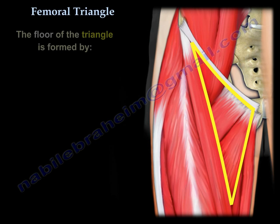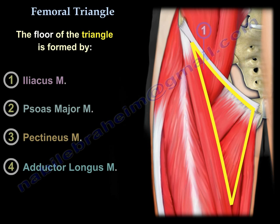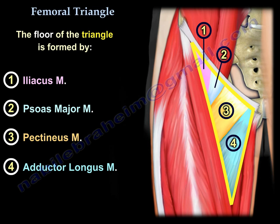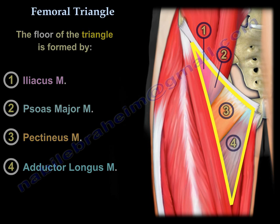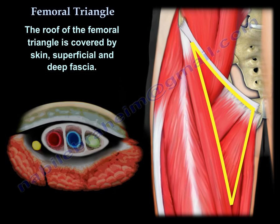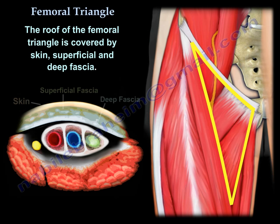The floor of the femoral triangle is formed by the iliacus muscle, the psoas major muscle, the pectineus muscle, and the adductor longus muscle. The roof of the femoral triangle is covered by skin, superficial and deep fascia.